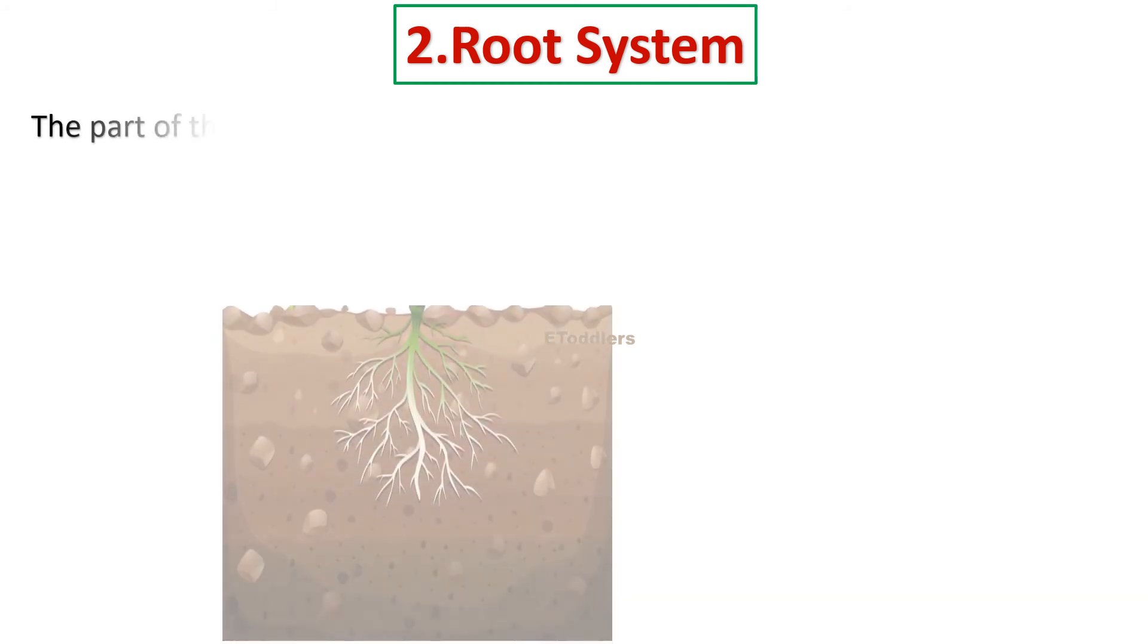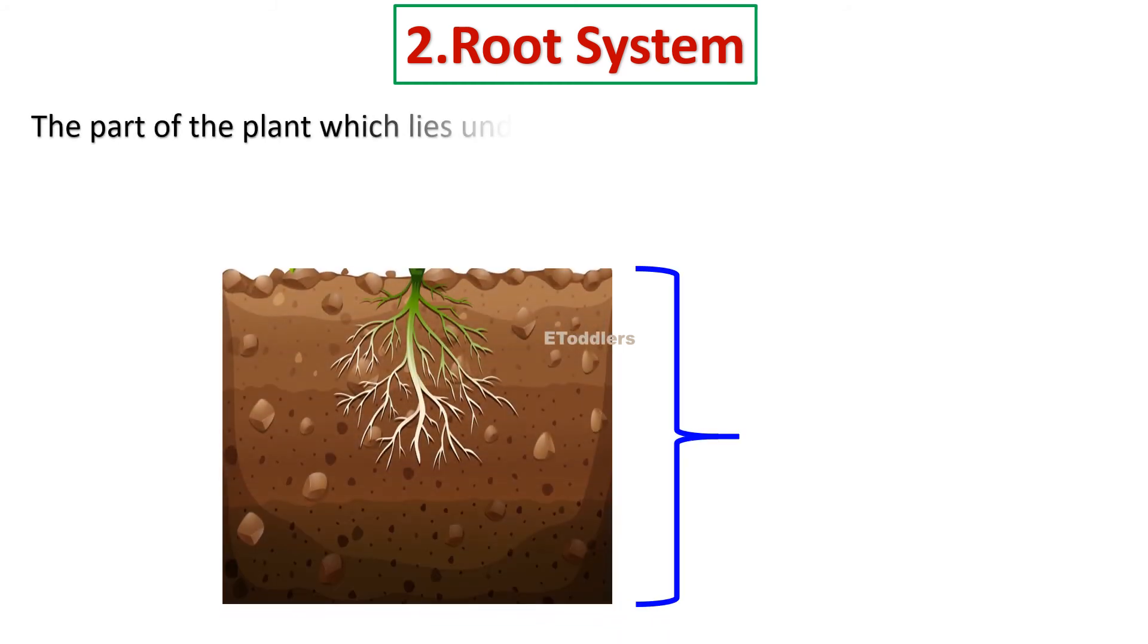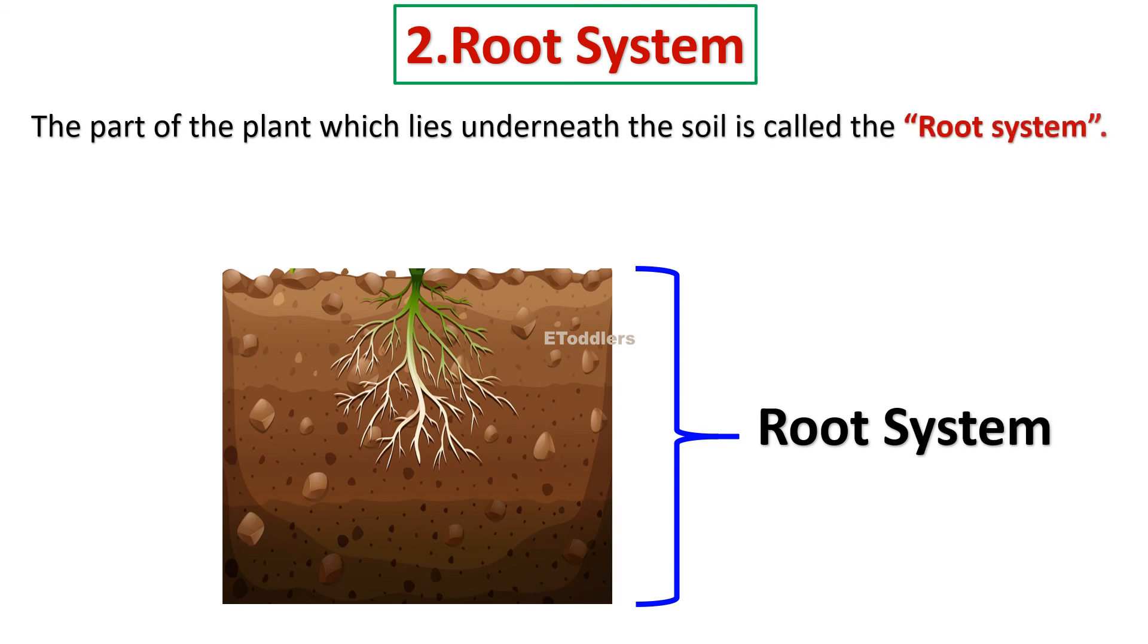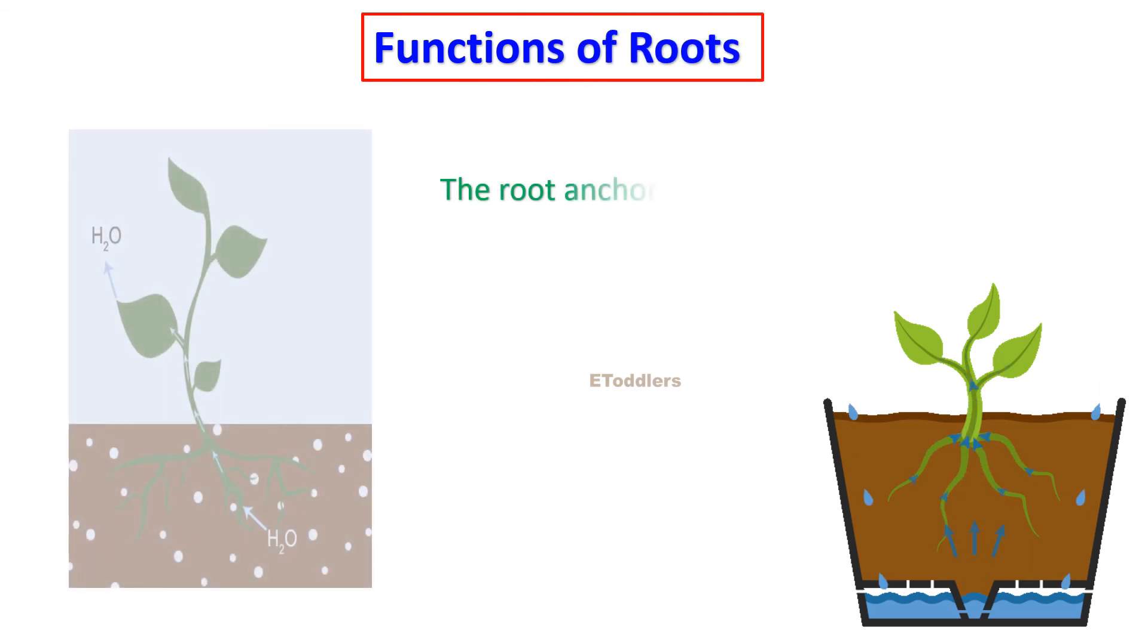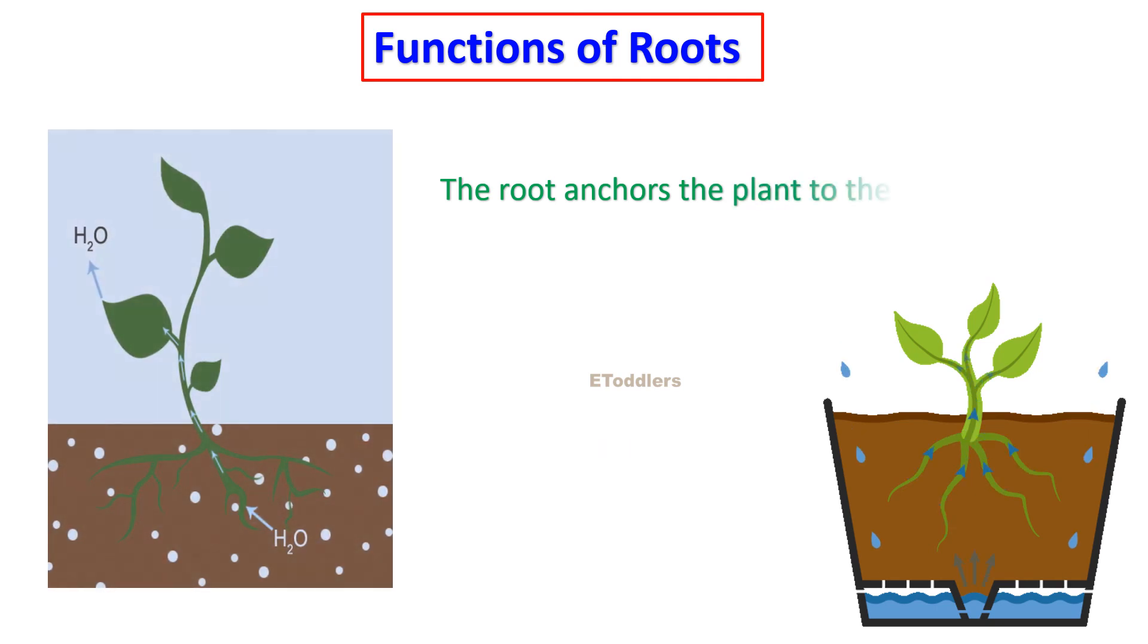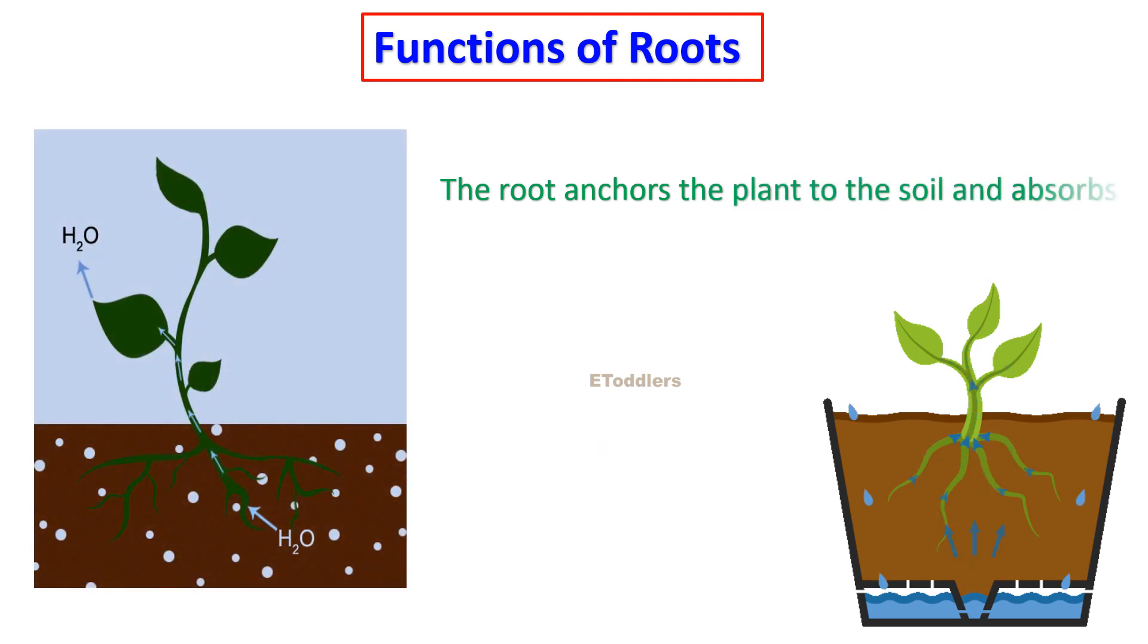Root system. The part of the plant which lies underneath the soil is called the root system. Functions of roots. The root anchors the plant to the soil and absorbs water and minerals from the soil. It holds soil in place.